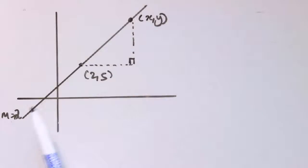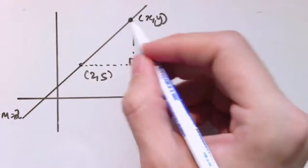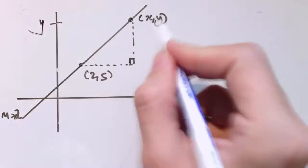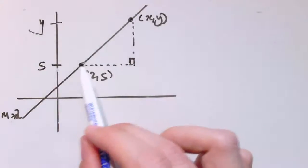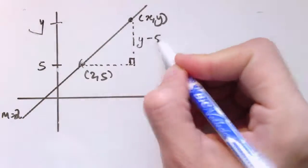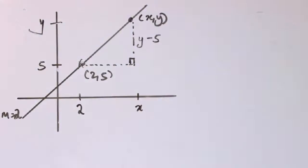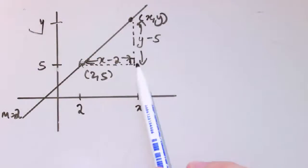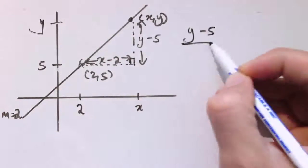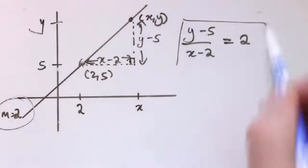My aim is to write down the gradient of the line in two ways. I know it's 2, but I'll also express it in terms of the change in y and change in x. The change in y is y minus 5, since the known point has y-coordinate 5. The change in x is x minus 2, since the known point has x-coordinate 2. So an expression for the gradient is (y minus 5) divided by (x minus 2).